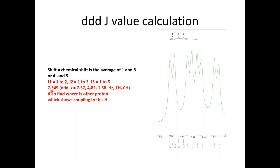Then report like 7.345 doublet of doublet of doublet 7.1 1 hertz for 1 proton and CH. You can calculate the shift value average of the 1 to 8 from this one to this one.